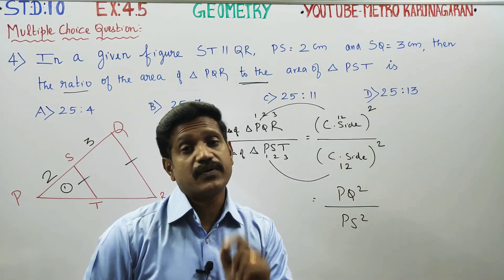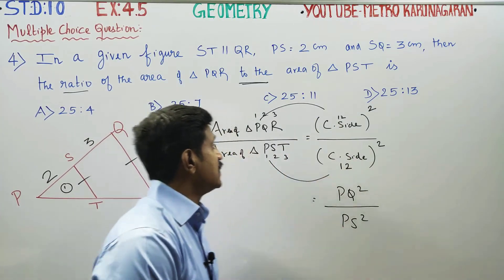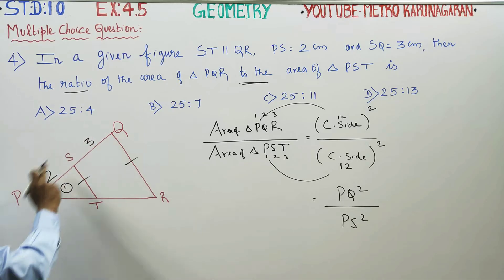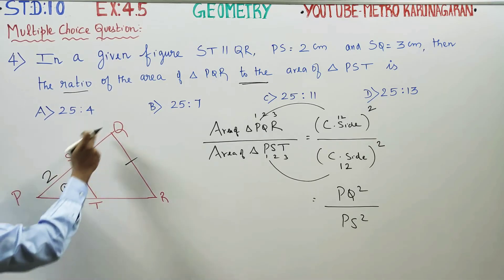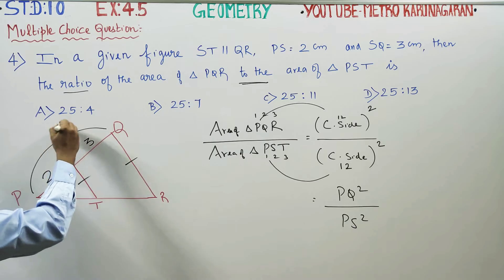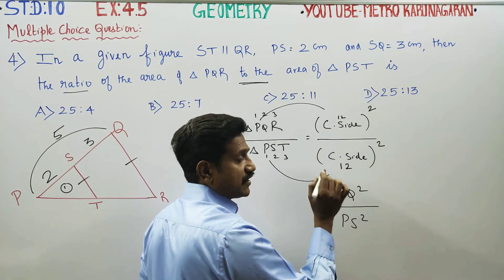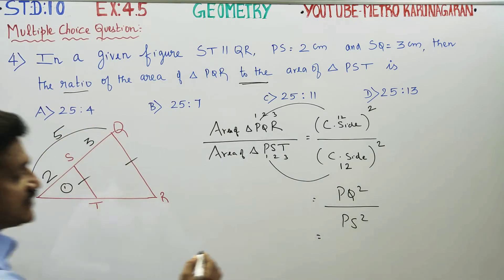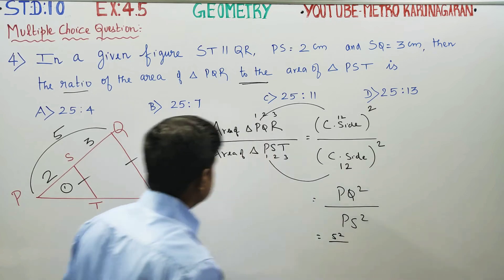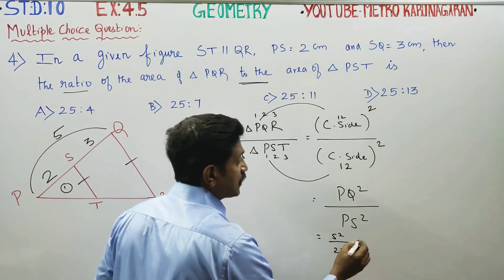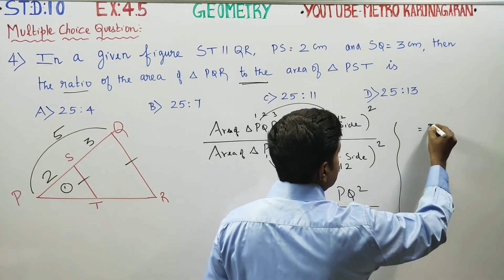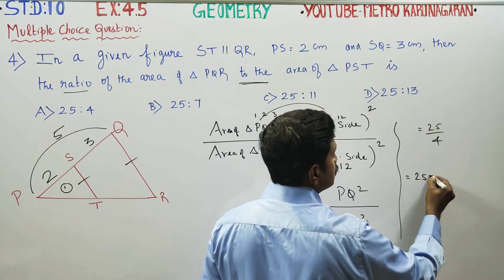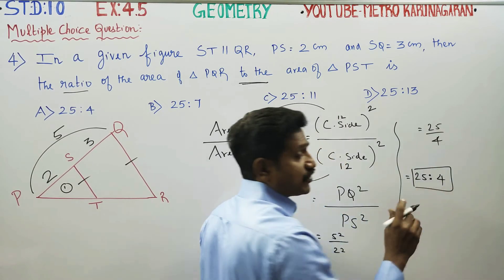Using the corresponding sides, that ratio is squared. PQ over PS gives us 5 over 2, so the ratio of areas is 25 to 4.